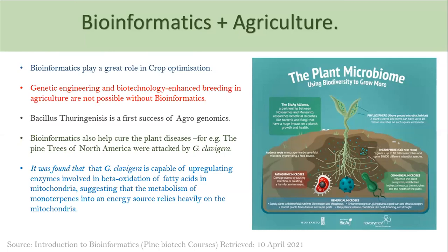Genetic engineering of plants and plant genomes is also carried out to improve the quality of plant products. A common example is Bacillus thuringiensis — the Bt cotton — which was the first success of agrogenomics. Another example from North America: pine trees were attacked by a substance called G. clavigera, which upregulated enzymes involved in beta-oxidation of fatty acids in mitochondria. Through bioinformatics, the pine tree sequence was studied and analyzed, and techniques were found to stop its destruction. This is how bioinformatics and agriculture go hand in hand.